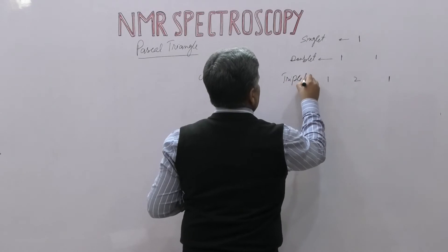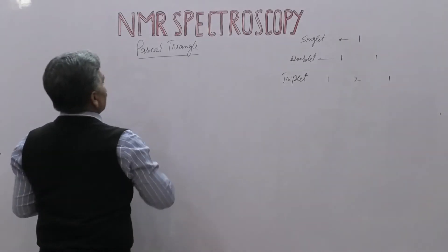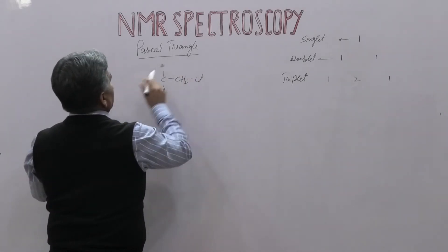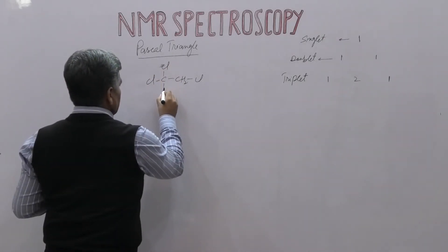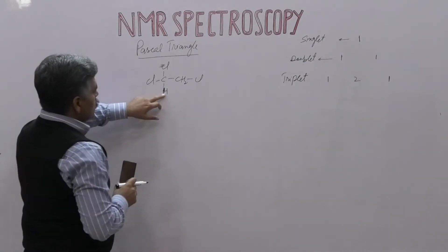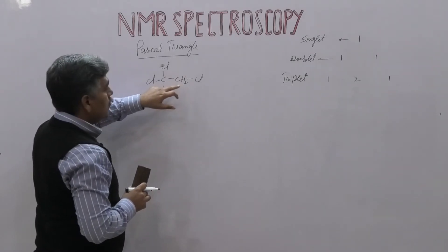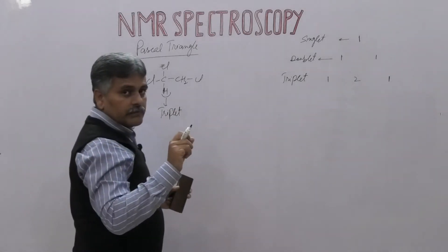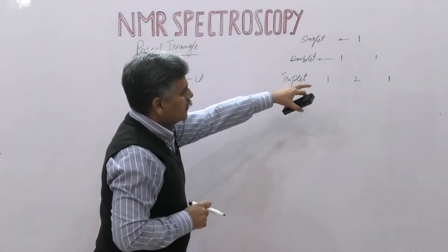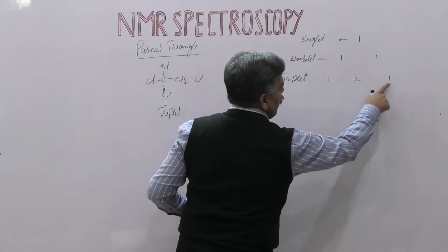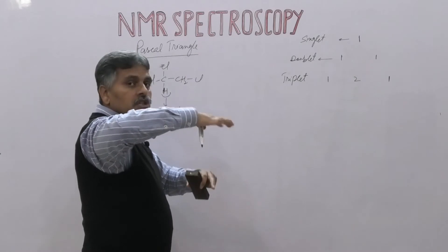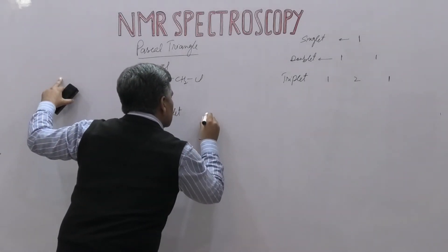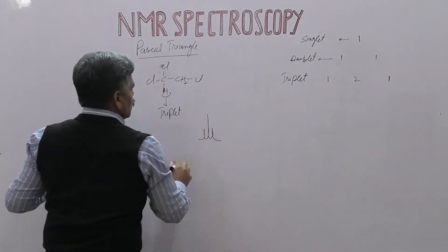In the case of a triplet, for example if we have a hydrogen attached to a carbon adjacent to two hydrogens, then according to the n+1 rule it gives us a triplet. The intensity of these three lines can be calculated from Pascal triangle: the two terminal lines have a 1:1 ratio, but the central line has double the intensity compared to the terminal lines, so the triplet has an intensity ratio of 1:2:1.